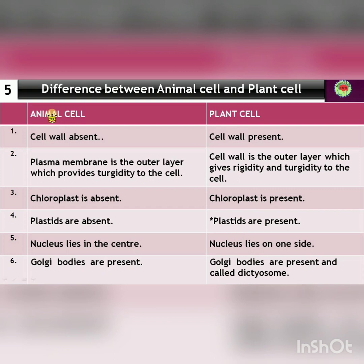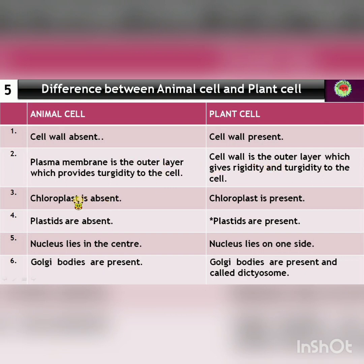The first difference: cell wall is absent in animal cell and cell wall is present in plant cell. The second difference: plasma membrane is the outer layer which provides turgidity to the cell. In animal cell, the plasma membrane is the outer covering that provides turgidity. In plant cell, the cell wall is the outer layer which gives rigidity to the cell.